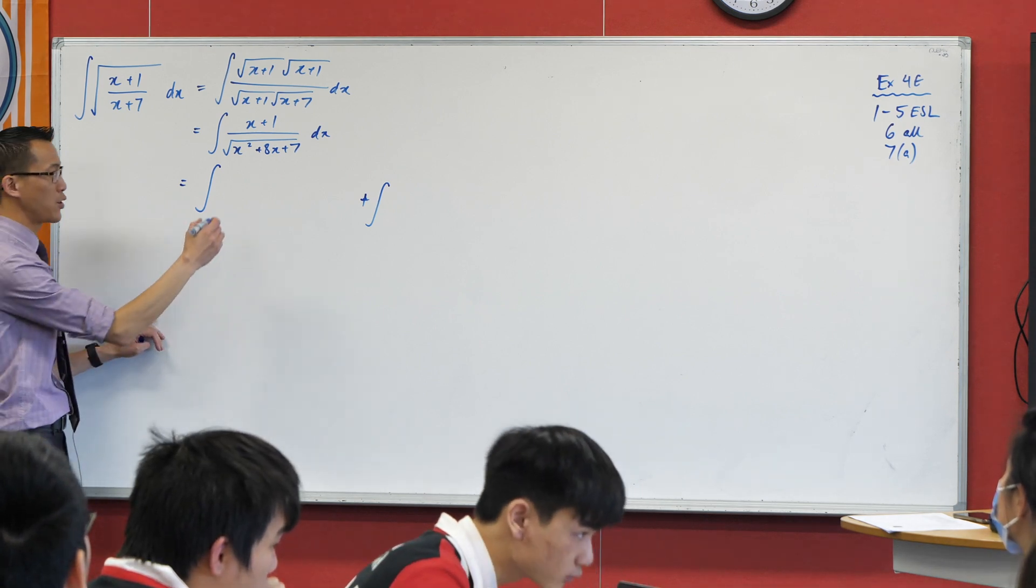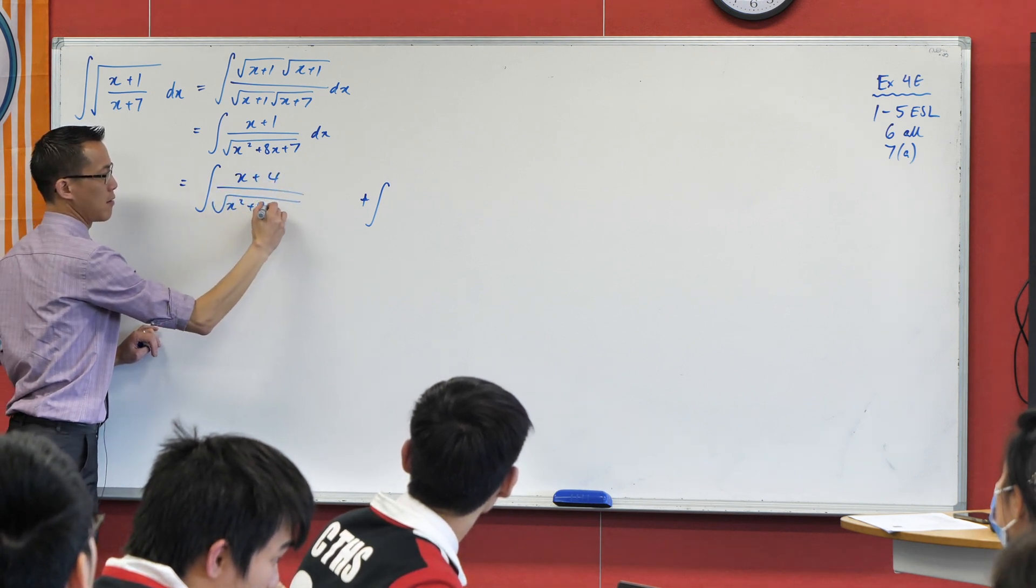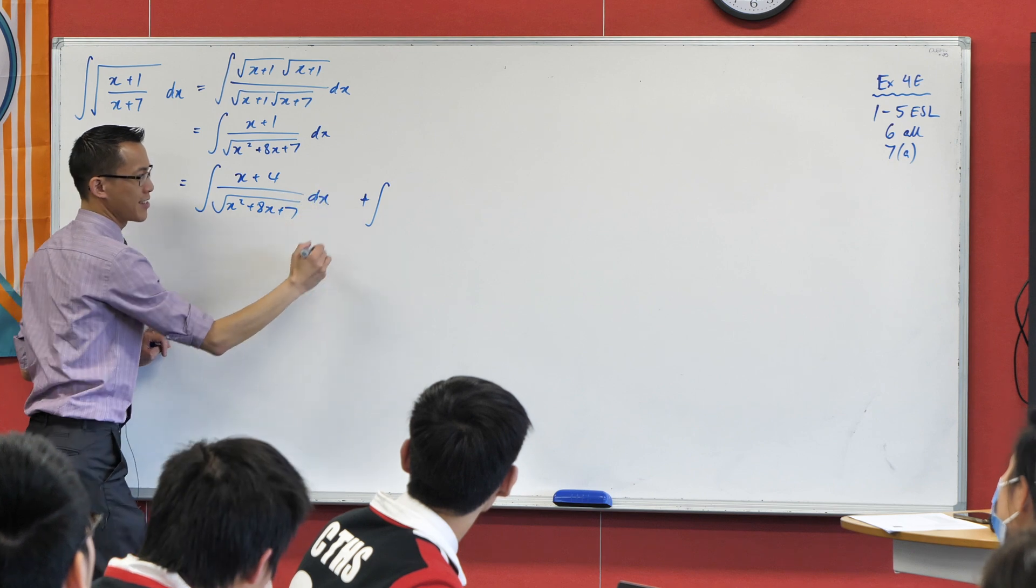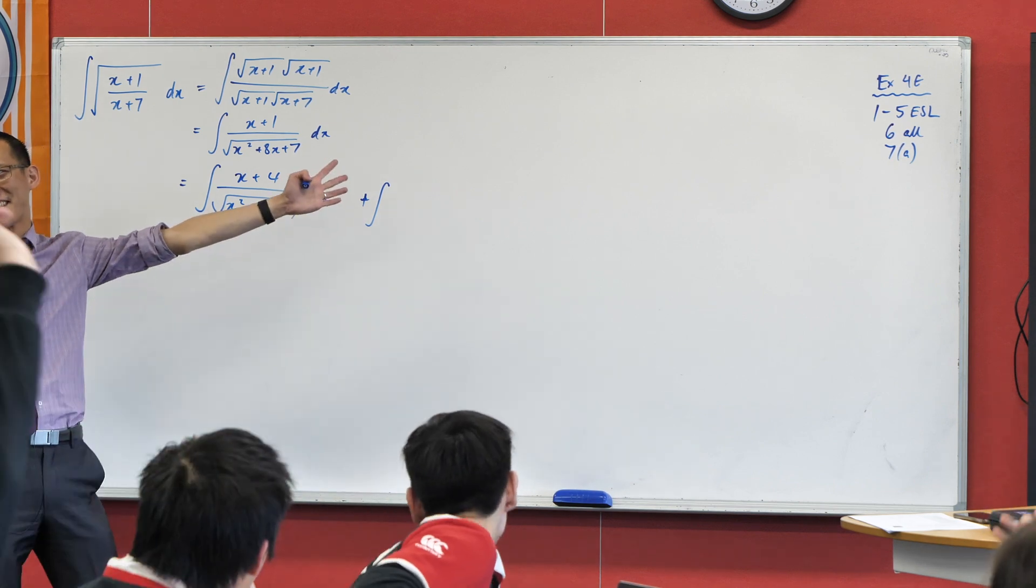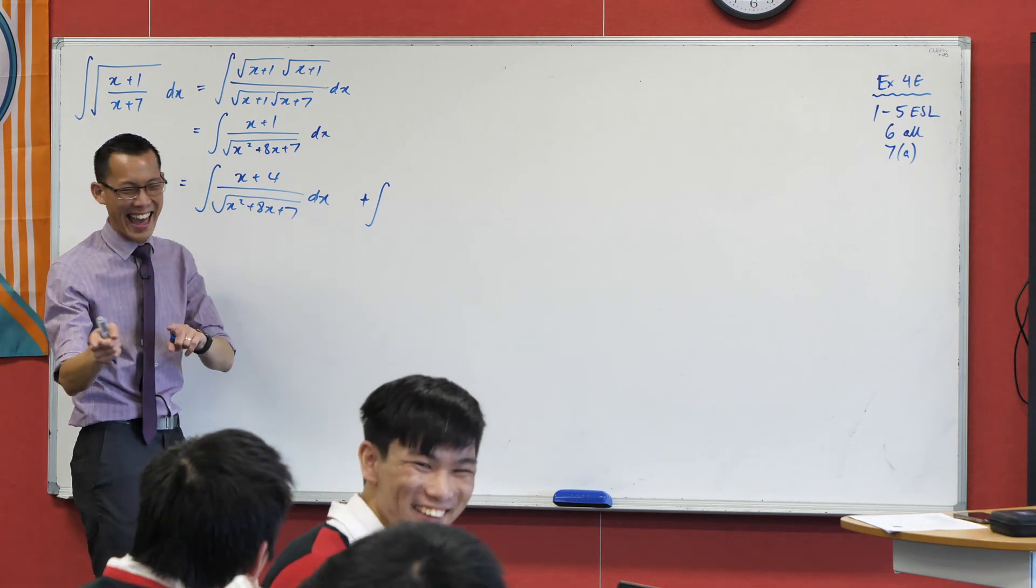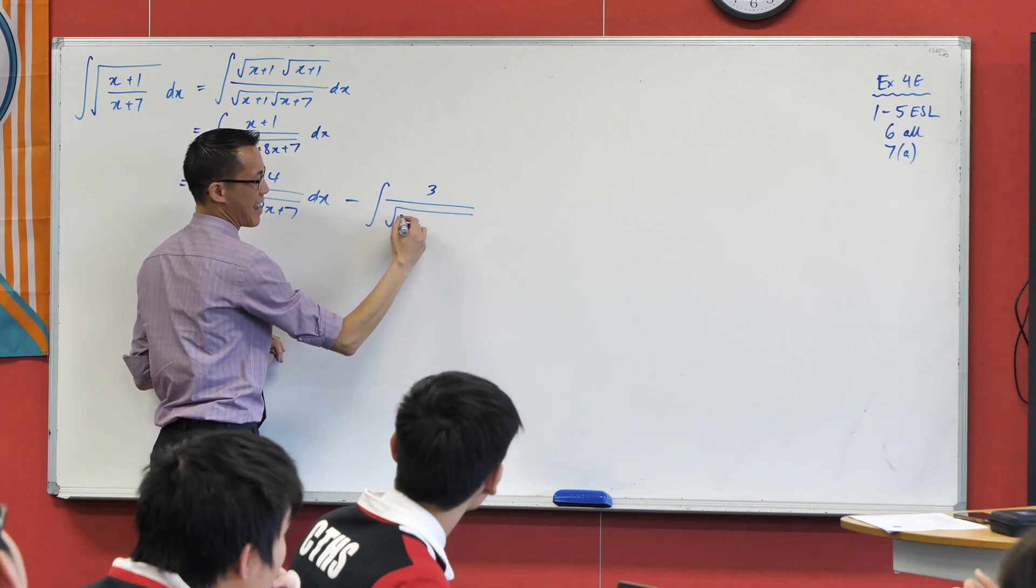Here's how I'm going to break up the numerator. I'm going to break up the numerator into x plus 4 and Morgan approves? Thank goodness Morgan approves, everything is fine, right? And I'm also going to put in minus 3. Okay, now.